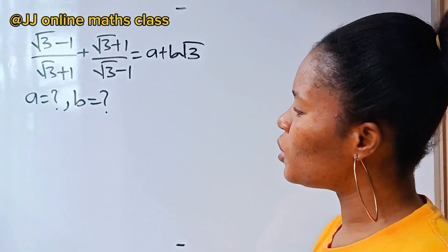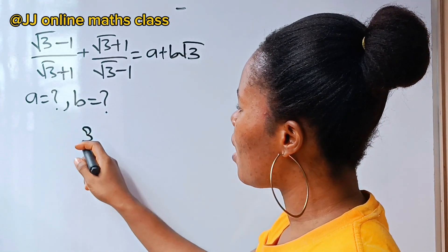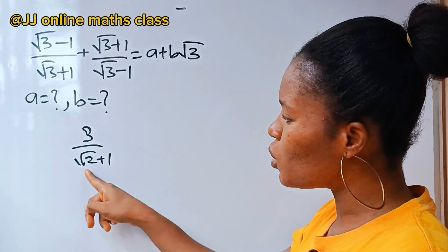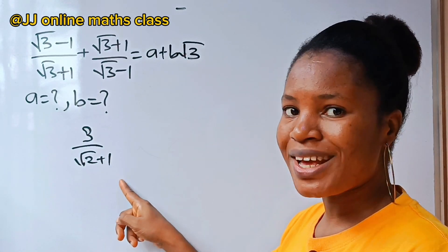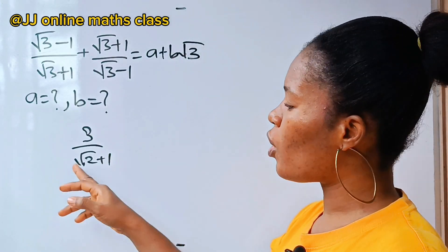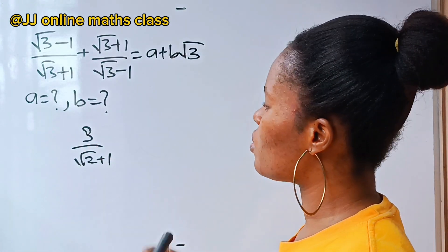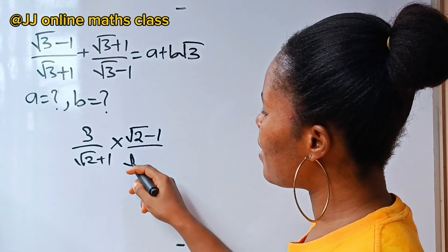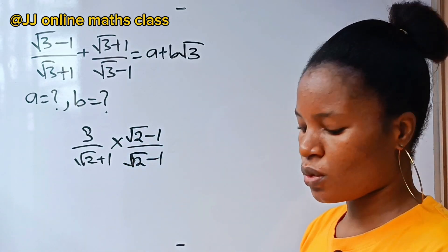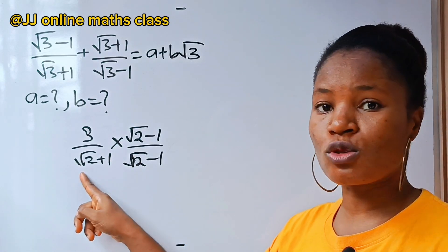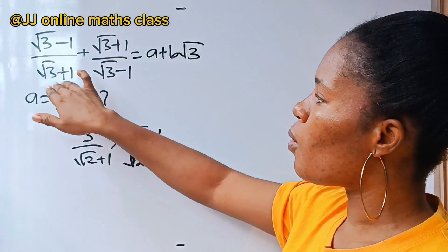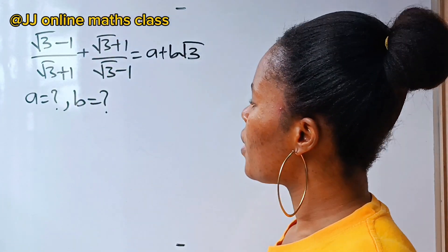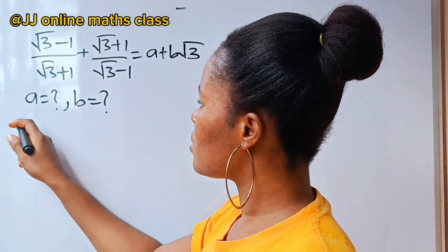What does the conjugate mean? For example, if you have 3 over root 2 plus 1, to rationalize this the conjugate of root 2 plus 1 is root 2 minus 1. So you rationalize this denominator by multiplying the numerator by root 2 minus 1 divided by root 2 minus 1. Root 2 minus 1 is the conjugate of root 2 plus 1, and that is exactly what we are going to apply here.